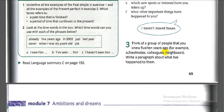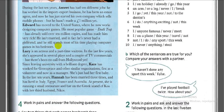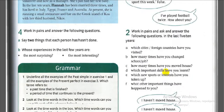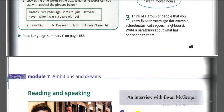Exercise three: think of a group of people you knew five or ten years ago — for example, schoolmates, colleagues, or neighbors — and write a paragraph about what has happened to them, similar to the story about Robbie's friends. Pause and do it. This is the end of the video.